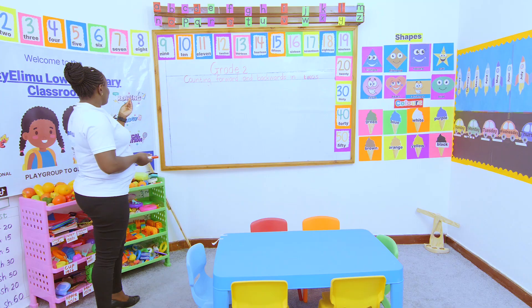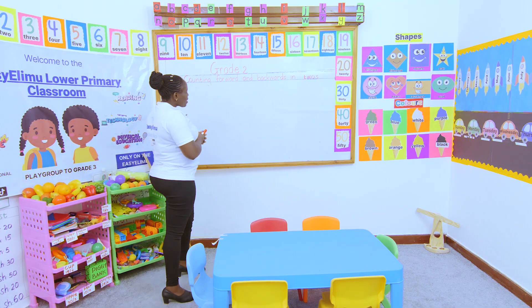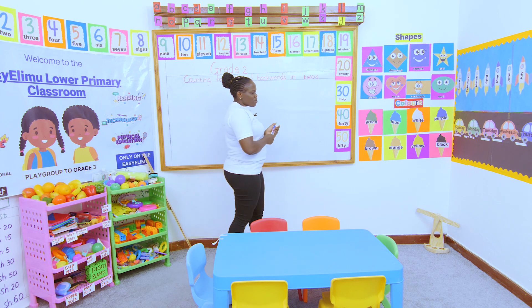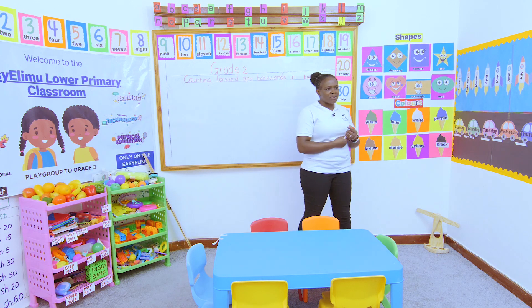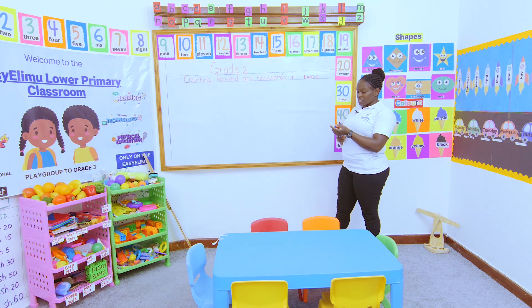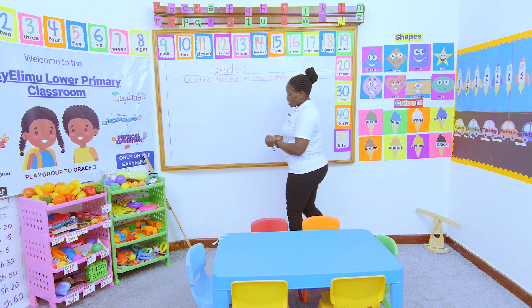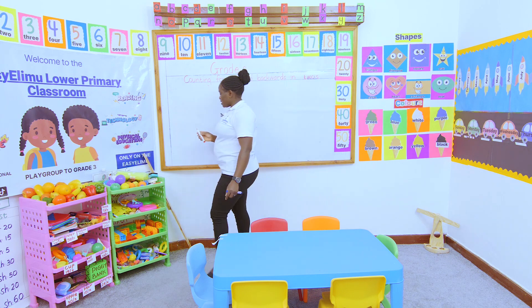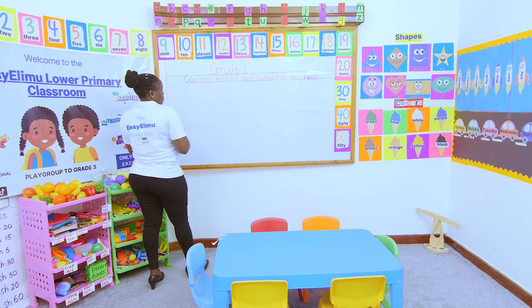Do you remember when we counted in twos? Who can remind me the rules? The rule for counting in twos — we said, when you look at these numbers nicely, most of them end with which number?